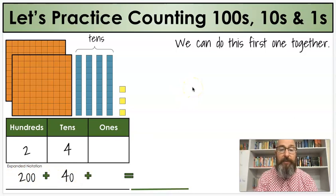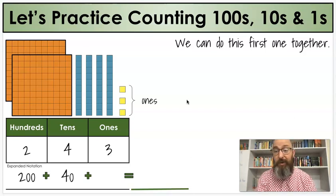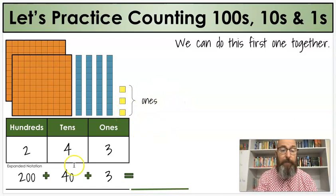After we look at the tens, we're going to look at our ones. We're going to count our ones. I have 1, 2, 3 ones. So I'm going to put a 3 in the ones place. And when you're counting by ones, you're just counting by one. 1, 2, 3. And if we put all that together, we have a new number, 243.